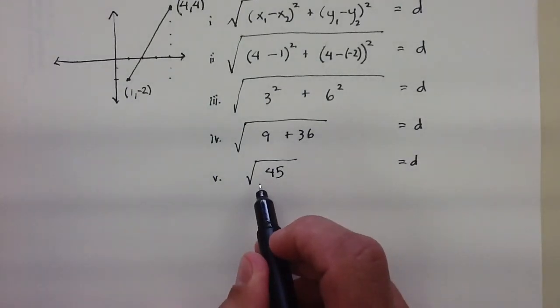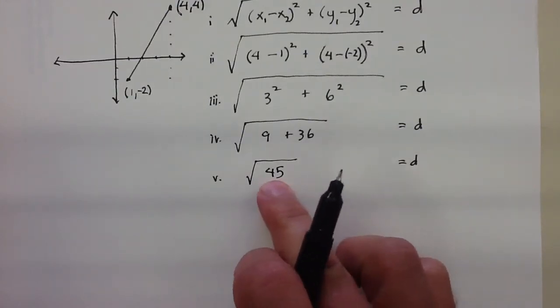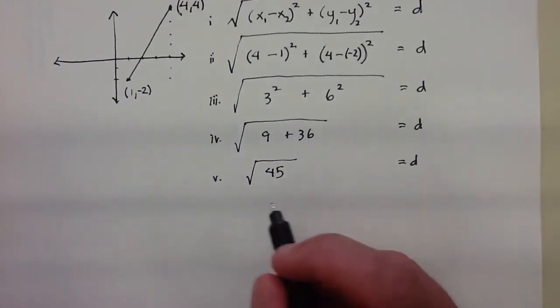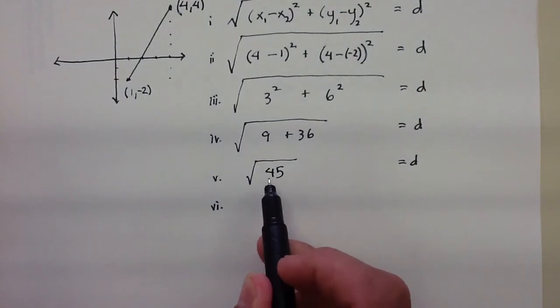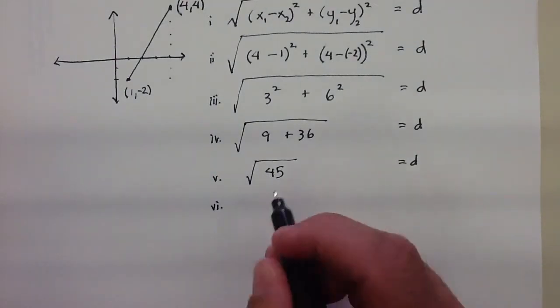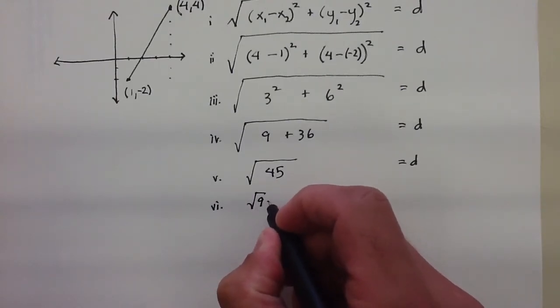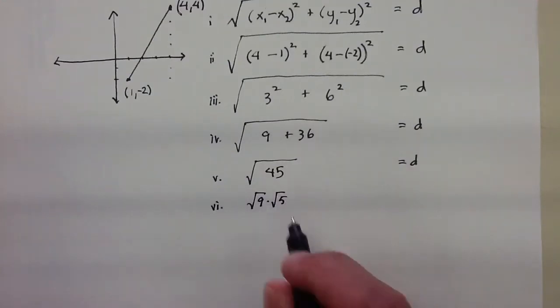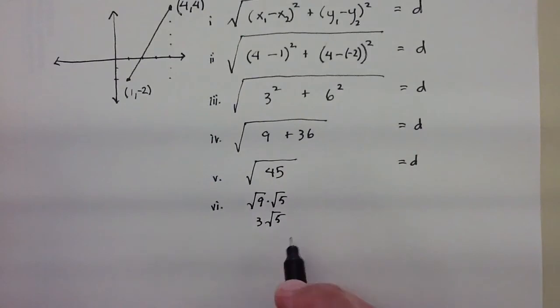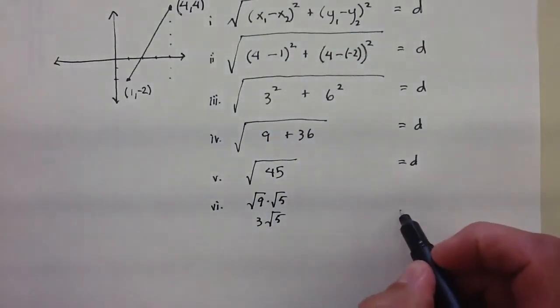And if your teacher might ask you to go ahead and simplify this, either by estimating what the square root of 45 is, or by writing it in a radical form. Now, let's see if we can remember how we did it in radical form. One of the techniques is you take out the perfect square factors in here, so I can rewrite 45 as the square root of 9 times the square root of 5. That's a perfect square, so you're going to get 3 radical 5 would be that distance here. And that's equal to the distance.